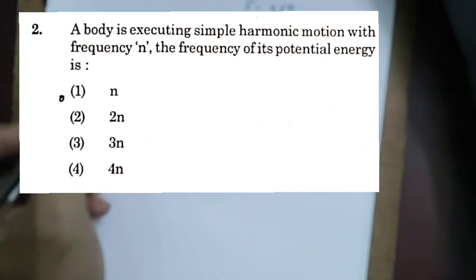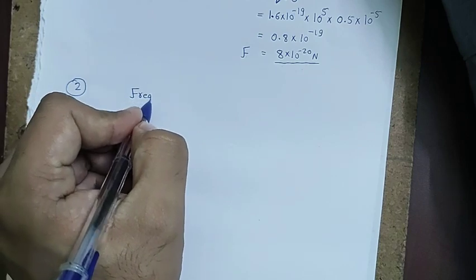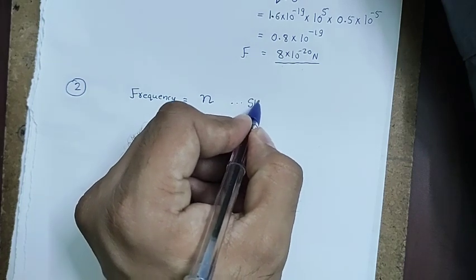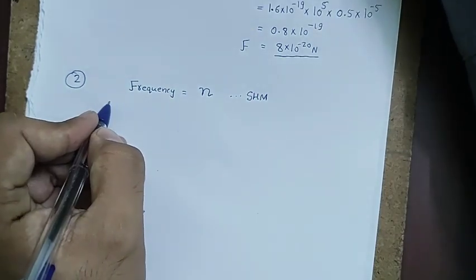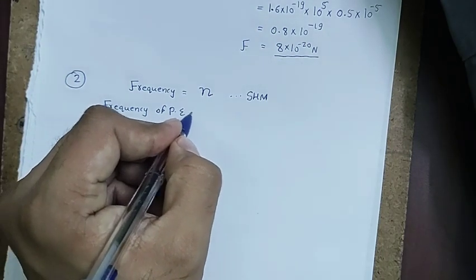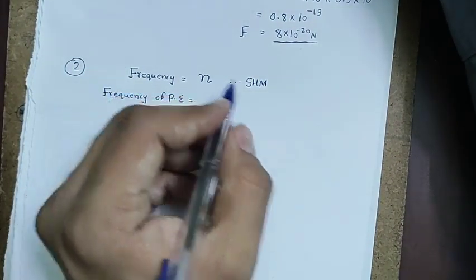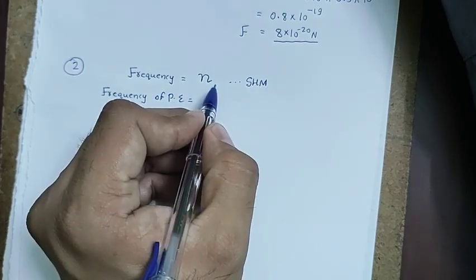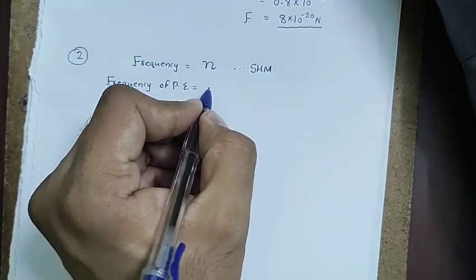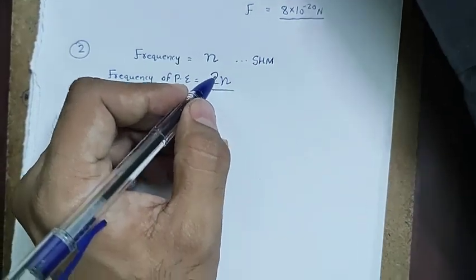Question 2 is from the oscillation chapter. If a body performs SHM with frequency n, the frequency of its potential energy oscillation is 2n — double the frequency. This is a well-known result.